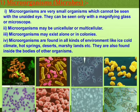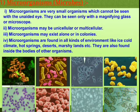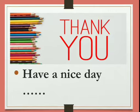Microorganisms are very small and cannot be seen by the naked eye. Microorganisms may be unicellular or multicellular, and they may exist alone or in colonies. Microorganisms are found in all kinds of environments like cold, hot, desert, and marshy areas. In the next lecture, we will learn about microorganisms as our friends. Till then, thank you and have a nice day.